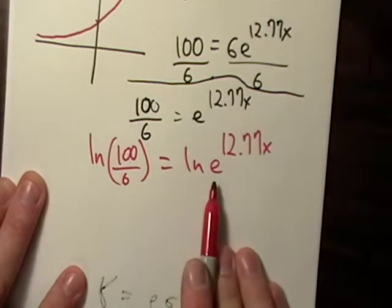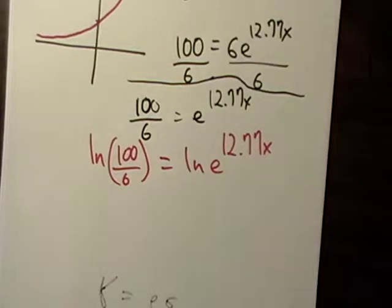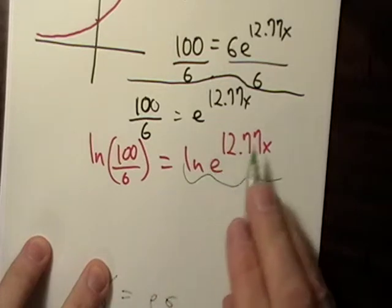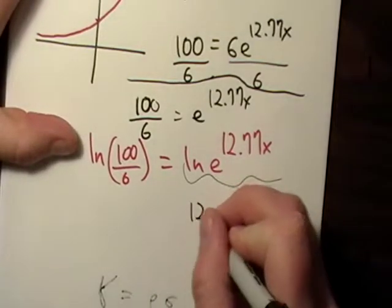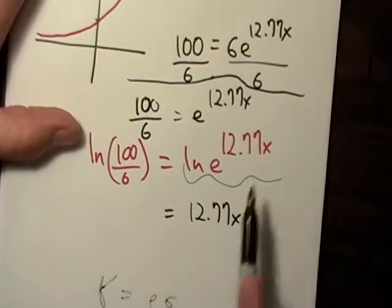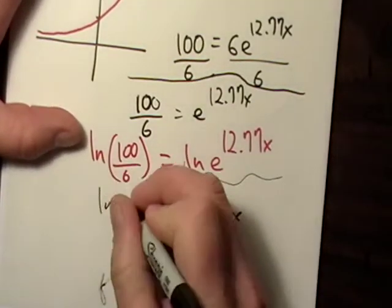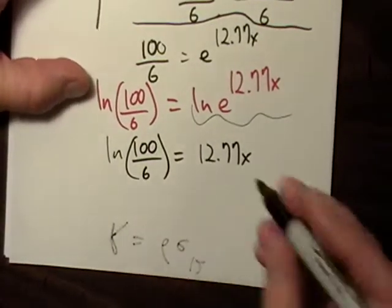Now if you look at this side of the equation, what does this whole thing really say? What does this natural log business say? It basically says E to the what gives me E to the 12.77X, right? Well, it just looks a little weird because there's a decimal wrapped up in there and it's a word problem. But all that is is 12.77X. You take E and raise it to the 12.77X, you'll get E to the, you know, yada, yada, yada.